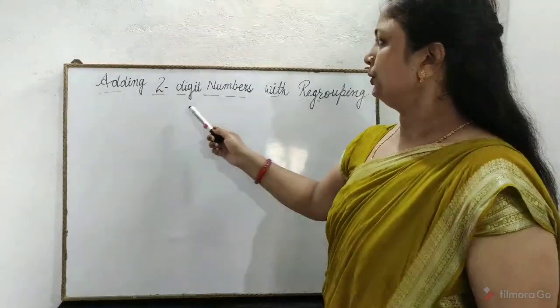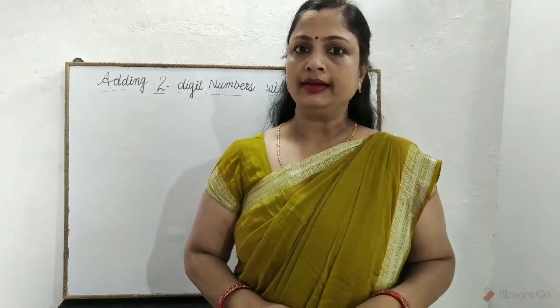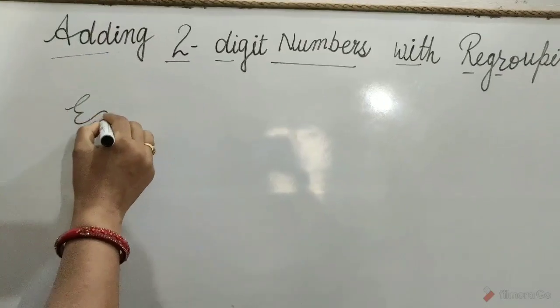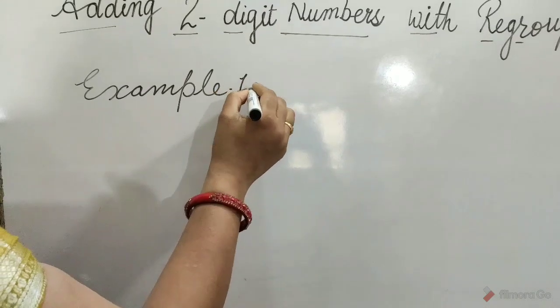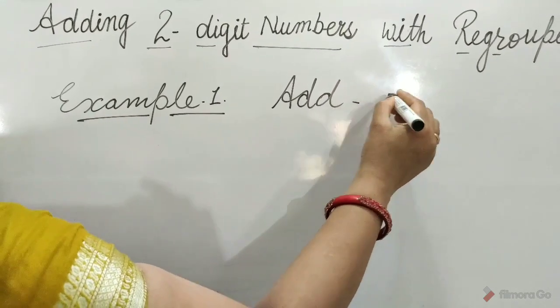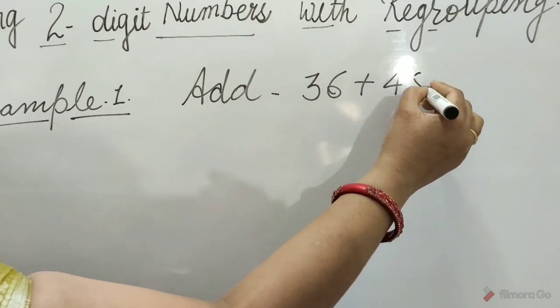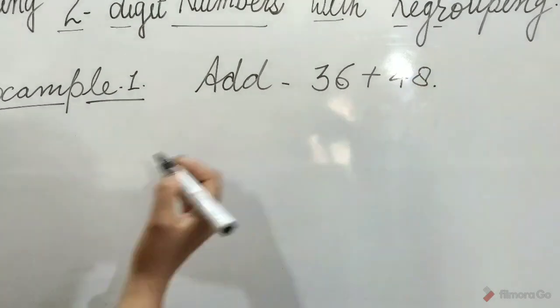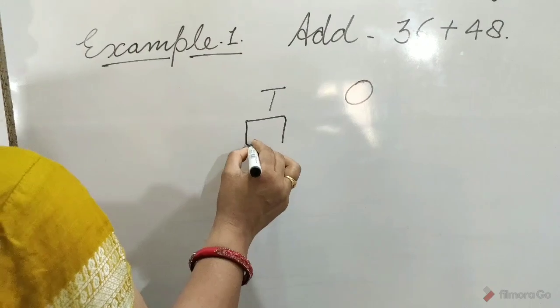Adding 2-digit numbers with regrouping. When we have more than 9 ones, we regroup 10 ones as 1 ten. Example: add 36 plus 48. Write tens and ones, and draw a carryover house.